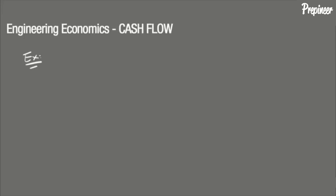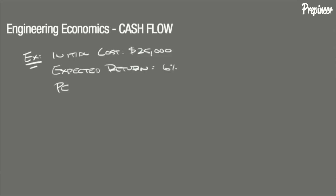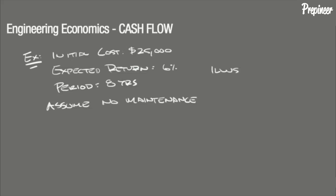A small business owner took out a loan to cover the purchase of a new piece of equipment for their assembly line. The equipment had an initial cost of $25,000 and was expected to return 6% annually on the original purchase price over the first 8 years. Assuming no maintenance costs were experienced over the 8 years, illustrate the cash flow diagram that best represents the scenario from the business owner's point of view.